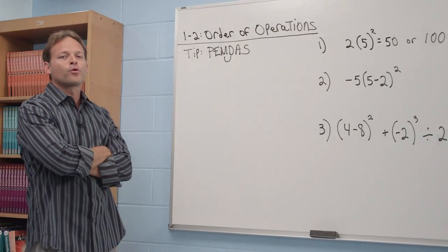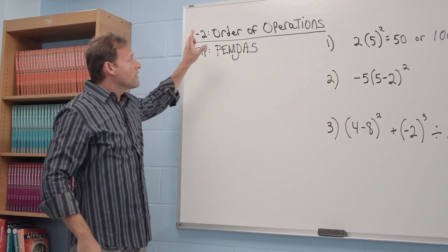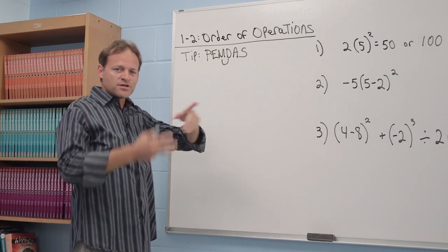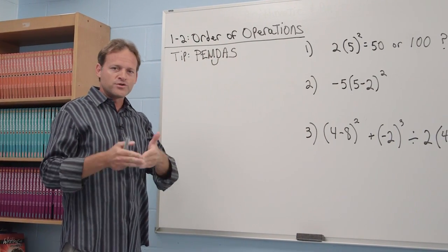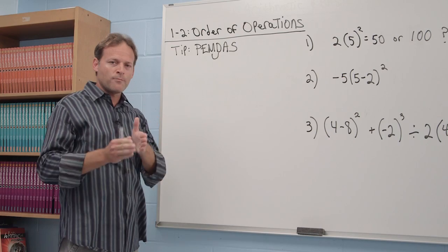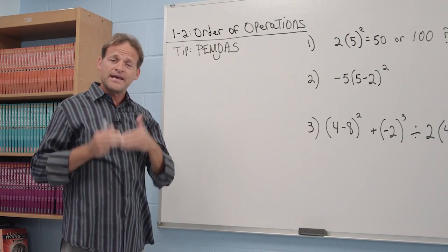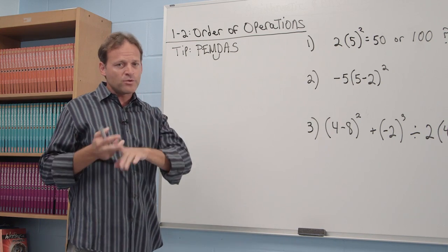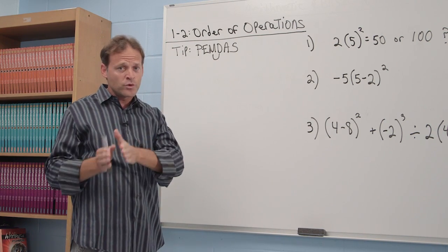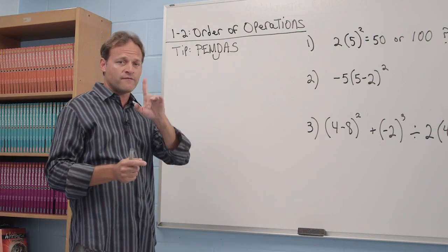In lesson two we're going to discuss the order of operations. The reason for this is because when we perform two or more mathematical operations one after the next, we need a particular order. If we didn't, then people may come up with different answers using all the correct math.